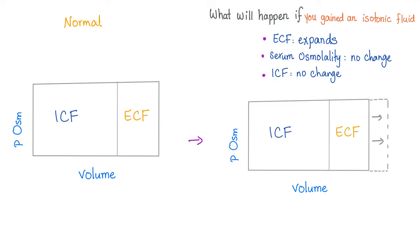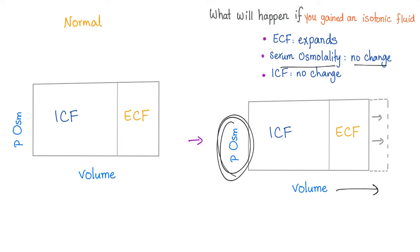Some tests require you to represent these facts on graphs — it's very easy. ICF on one side, ECF on the other. X-axis: volume; y-axis: plasma osmolality. When we gain an isotonic fluid, ECF expands — increase the volume of the ECF on the x-axis. Serum osmolality: no change, so don't change the y-axis. ICF compartment: no change, so don't increase it. Only the ECF is expanded.